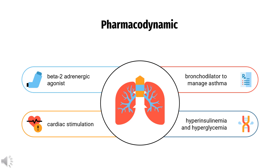Pharmacodynamics: Beta-2 adrenergic receptors are located at sympathetic neuroeffector junctions of many organs, including the uterus. Ritadrine is a beta-2 adrenergic agonist. It stimulates beta-2 adrenergic receptors, increases cAMP level, and decreases intracellular calcium concentration. The decrease of calcium concentration leads to relaxation of uterine smooth muscle and, therefore, a decrease in premature uterine contractions.